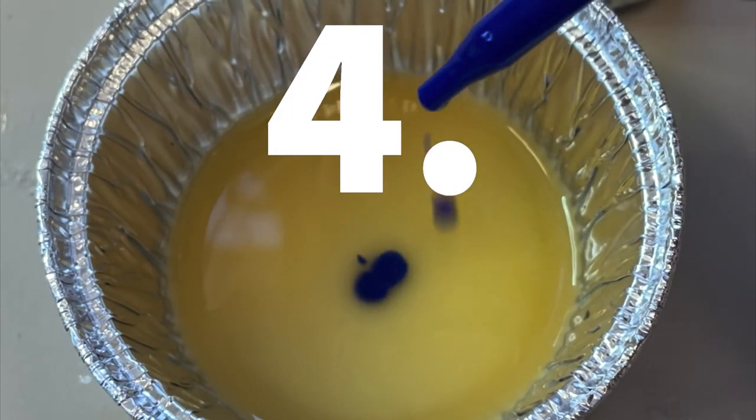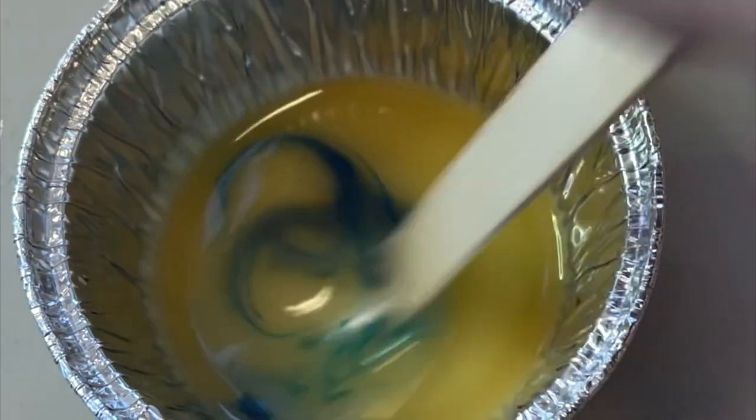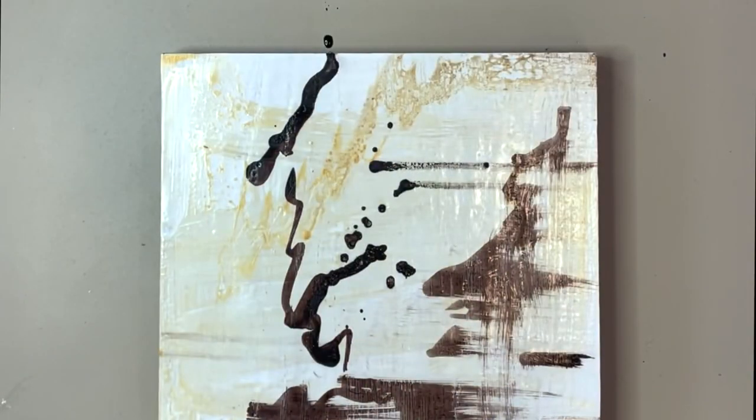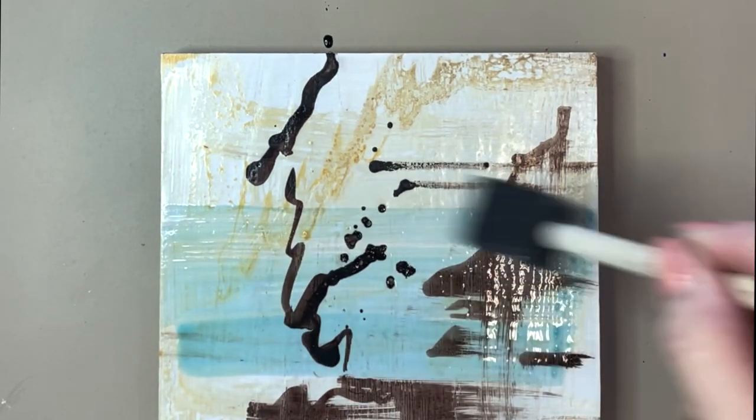You can add ink to clear shellac. Just a couple of drops, stir it up really well, and then apply to your board using a foam brush, and then fuse.